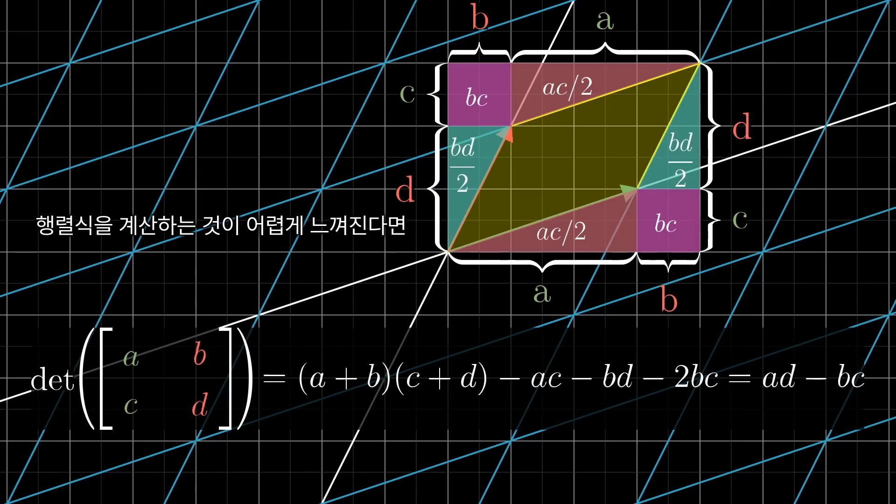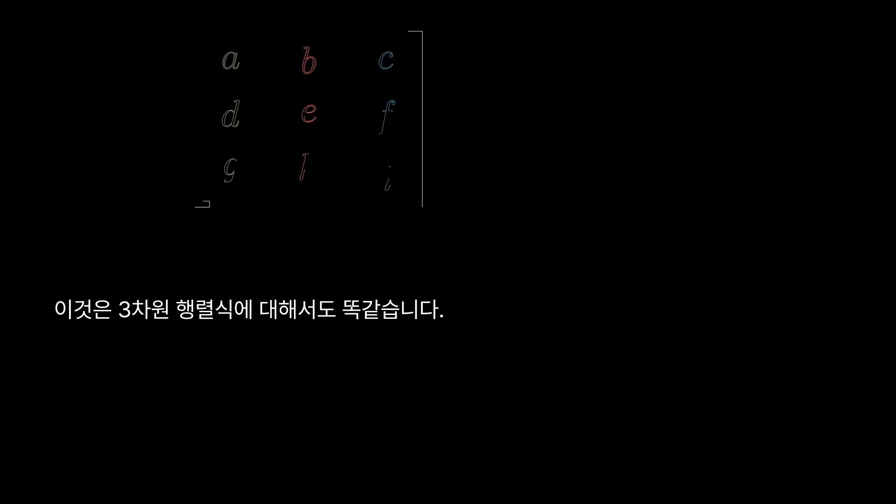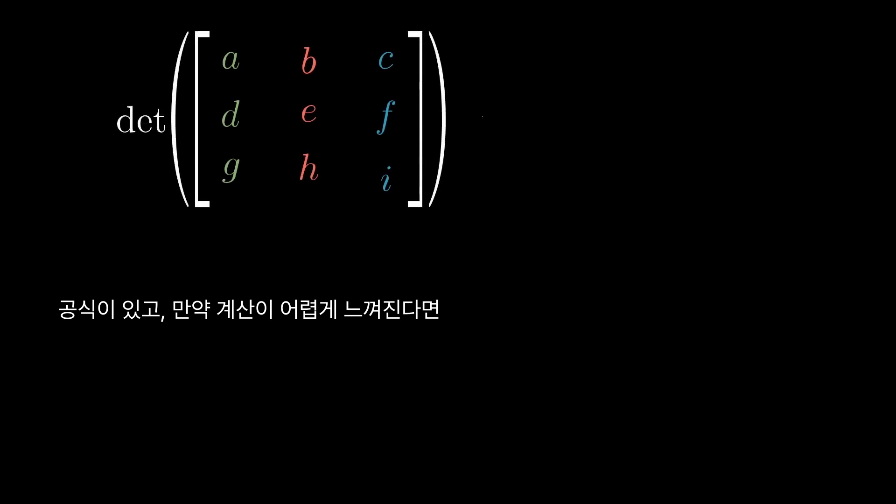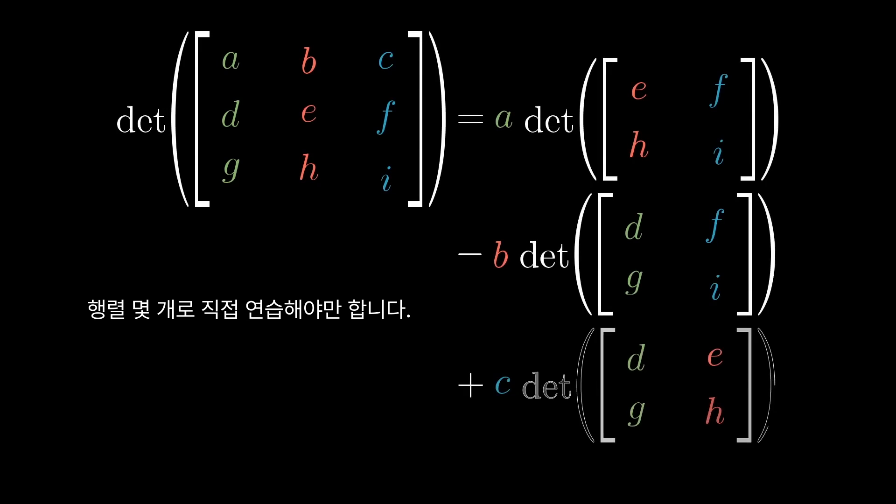Now, if you feel like computing determinants by hand is something that you need to know, the only way to get it down is to just practice it with a few. There's really not that much I can say or animate that's going to drill in the computation. This is all triply true for three-dimensional determinants. There is a formula, and if you feel like that's something you need to know, you should practice with a few matrices. Or, you know, go watch Sal Khan work through a few.